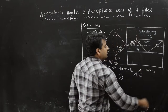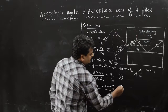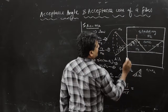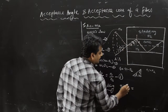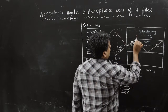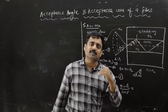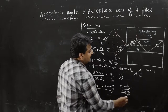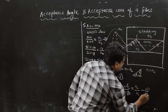At the core-cladding interface, n1 is greater than n2. The angle of incidence at this interface is theta c, the critical angle. Applying Snell's law at the core-cladding interface: sin theta c divided by sin 90 equals n2 by n1. That is equation number 6.